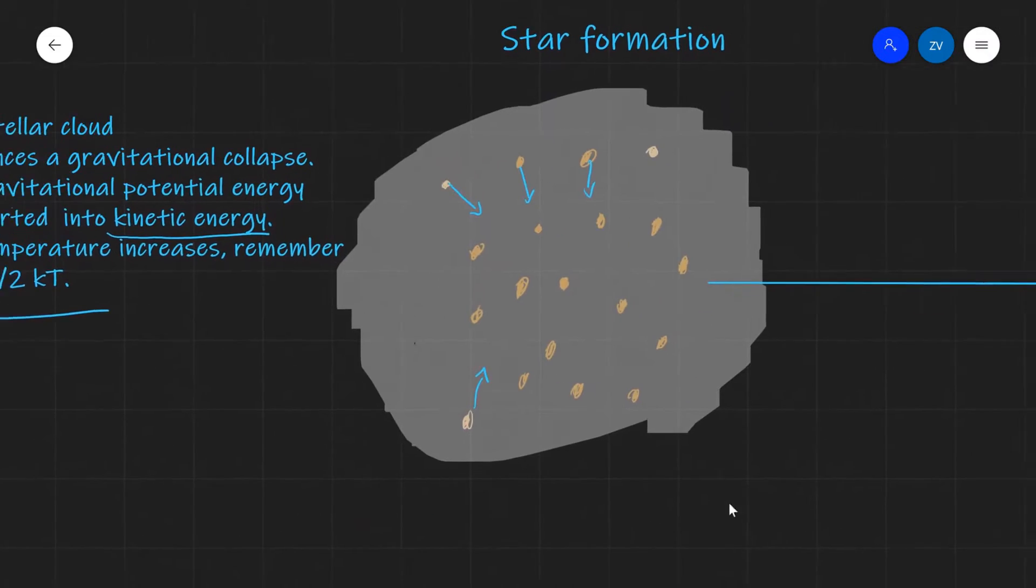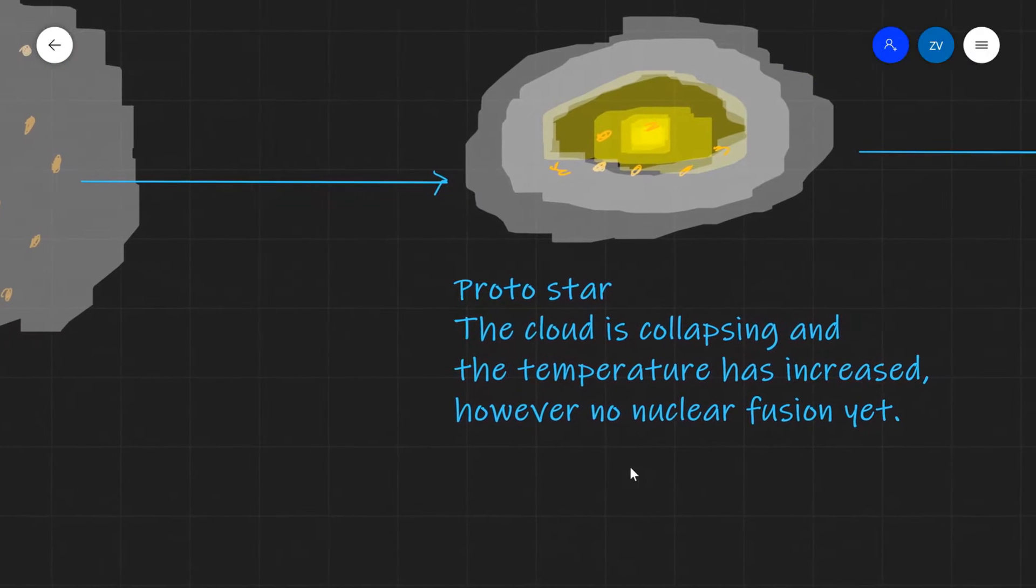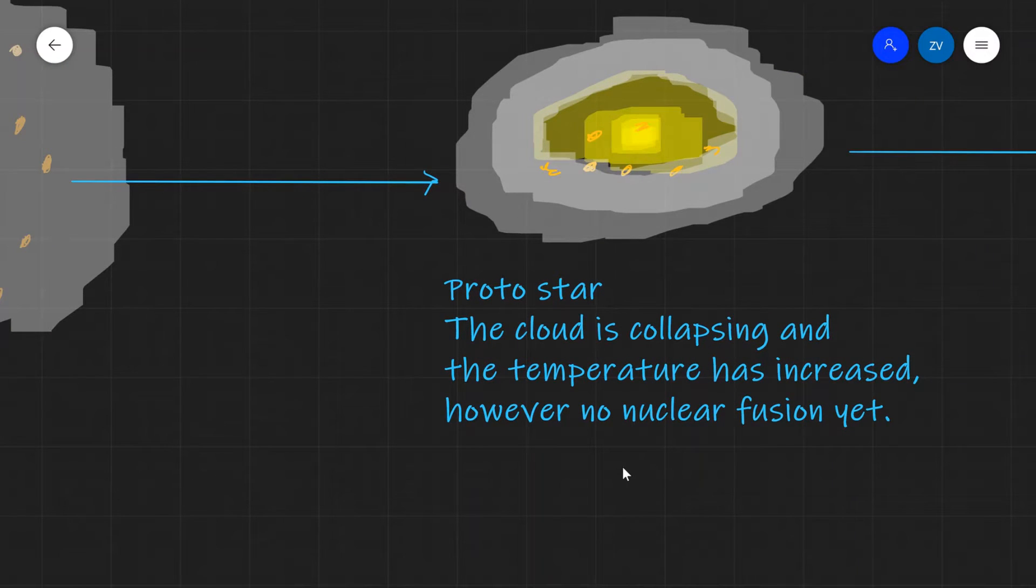During this process, this is actually the formation of what is known as a protostar, which is a star that has not yet started to perform nuclear fusion reactions. However, you can actually see it, it is glowing under the high temperature and the cloud is collapsing.